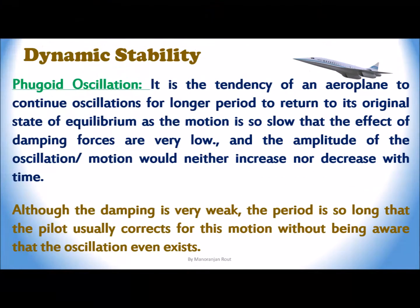Phugoid oscillation is the tendency of an aeroplane to continue oscillations for a longer period in returning to its original state of equilibrium, as the motion is so slow that the effect of damping forces is very low, and the amplitude of oscillation neither increases nor decreases with time. Although the damping is very weak, the period is so long that the pilot usually corrects for this motion without being aware that the oscillation even exists.